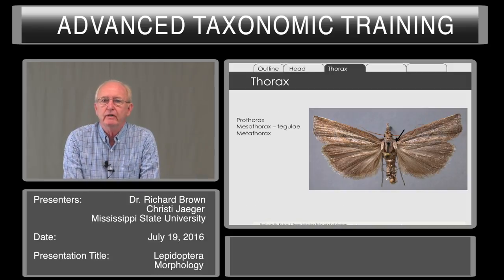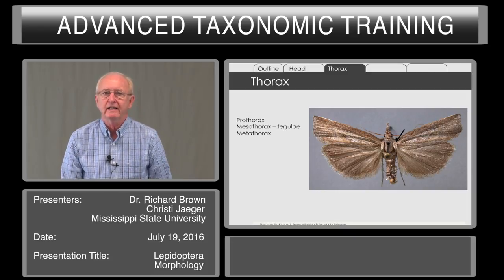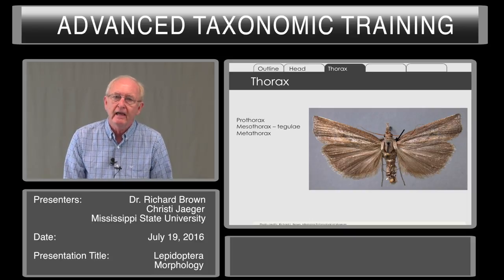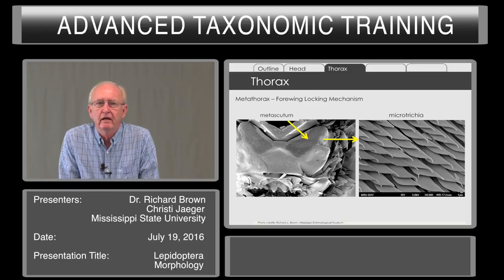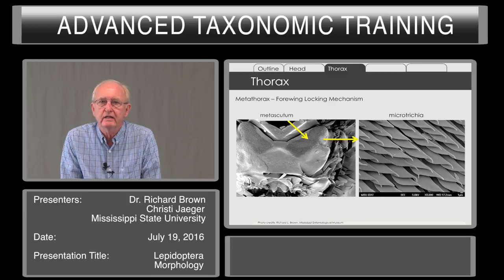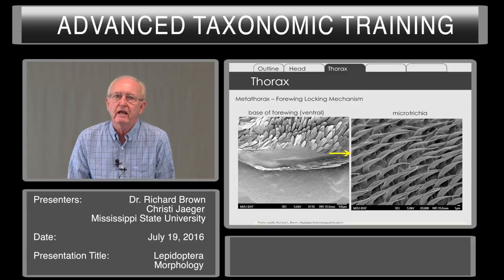The thorax has three segments — the prothorax, mesothorax, and metathorax. It's the middle segment that's the large one; that's the one that holds the four wings, and it has a very complex endoskeleton. It's also useful because that's where we put a pin through the moth, and it holds on to the pin quite well. If we look at the metathorax, we see something very interesting: the anterior portion, the metascutum, doesn't have scales. It has these long, blade-like projections called microtrichia, and these microtrichia lock in with other microtrichia on the forewing — a locking mechanism between the metathorax and the forewing.